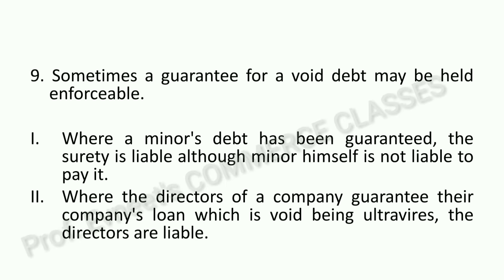Seventh: sometimes a guarantee for a void debt may be held enforceable. A void contract is one that was never valid in the first place. But in some cases involving void debts, the contract of guarantee can still be enforceable in court. For example: a minor's debt — any contract with a minor is void and can never be valid. However, in a guarantee contract, if someone has given a guarantee for a minor's debt, the surety becomes the principal debtor, because the minor cannot be personally held liable for payment.